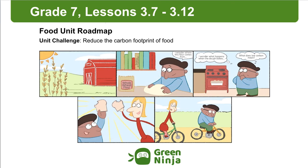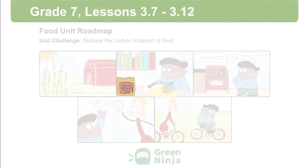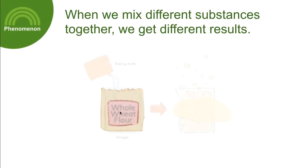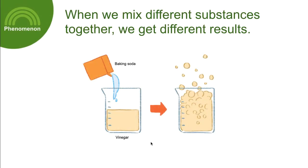In this lesson group, we focus on the components of a chemical reaction and how to engineer a chemical reaction. We'll be using this image of baking soda and vinegar being combined to help illustrate the phenomenon that when we mix different substances together, we get different results.